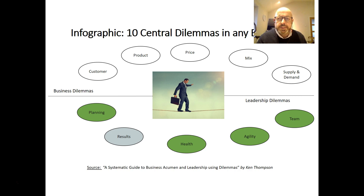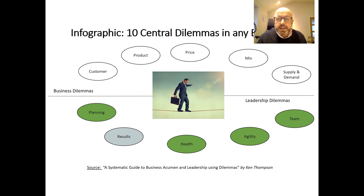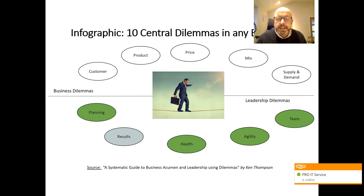The first dilemma is the customer dilemma. There are different types of customers you have to deal with. For example, in a retail business you'll have your loyals, who are very profitable and very loyal to you, and then you have your regulars, and then your occasionals. Sometimes you will have to focus on your loyals, but other times you may have to focus on your occasionals — for example, if you want to build market share — and it's always difficult to know which group of customers to be focusing on at any point in time.